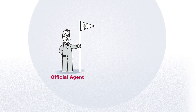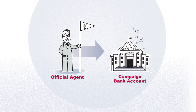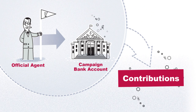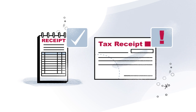Your official agent must open a separate bank account to be used exclusively for the campaign. You can start accepting contributions as soon as you have an official agent and a campaign bank account. Providing receipts is mandatory, but you cannot issue tax receipts until after your nomination is confirmed by the returning officer.